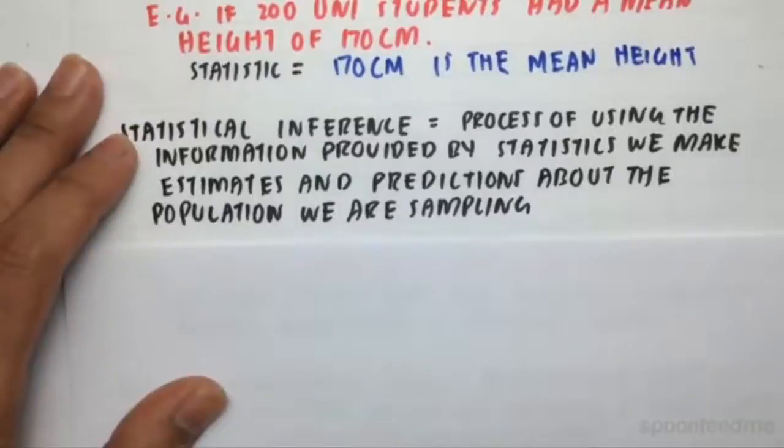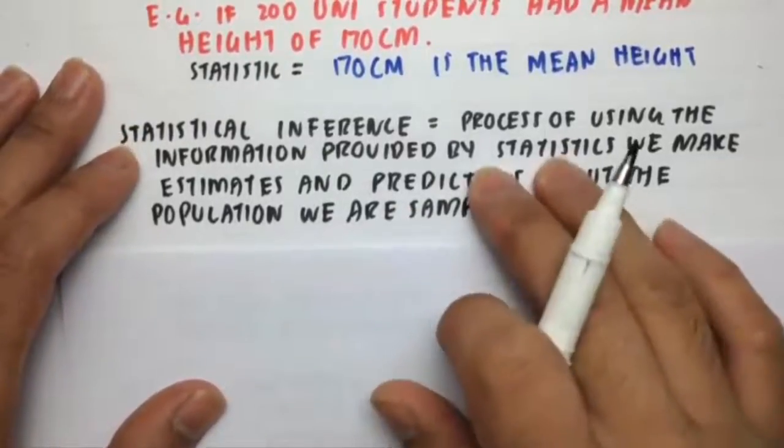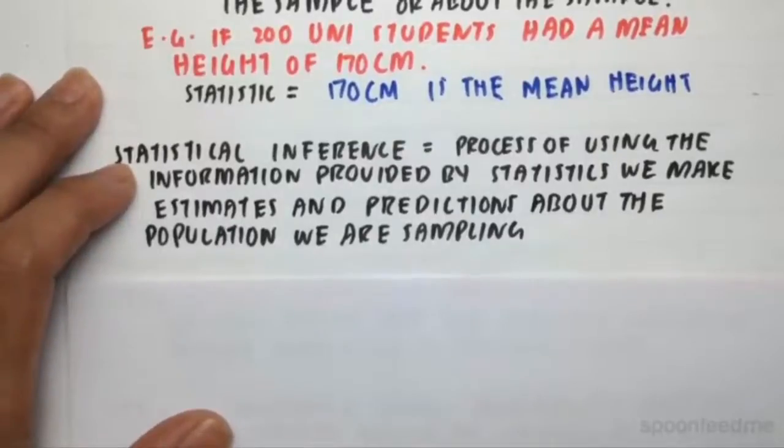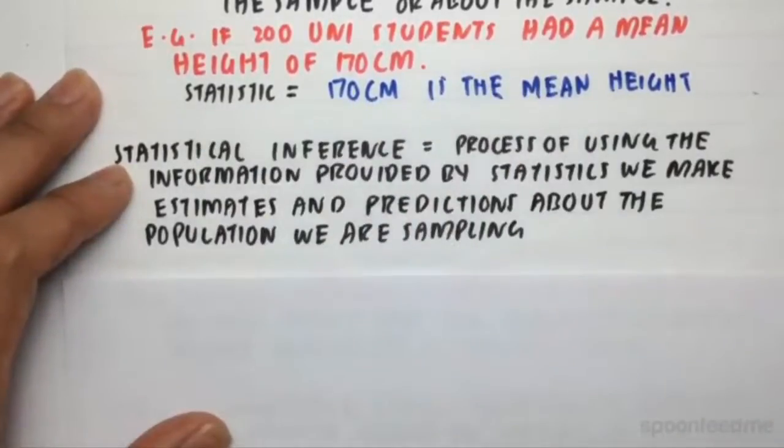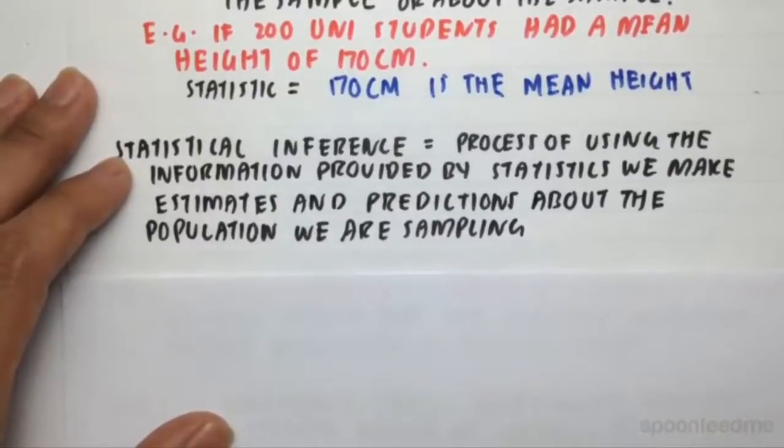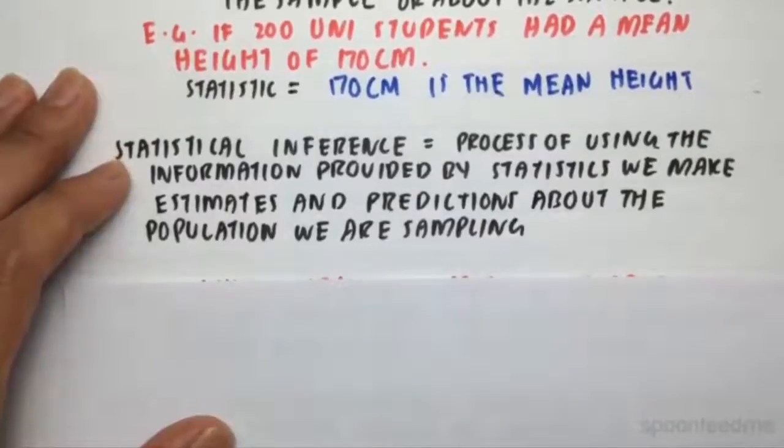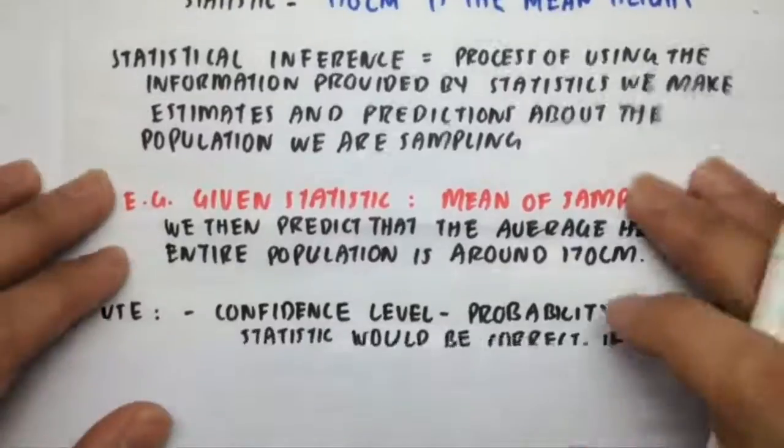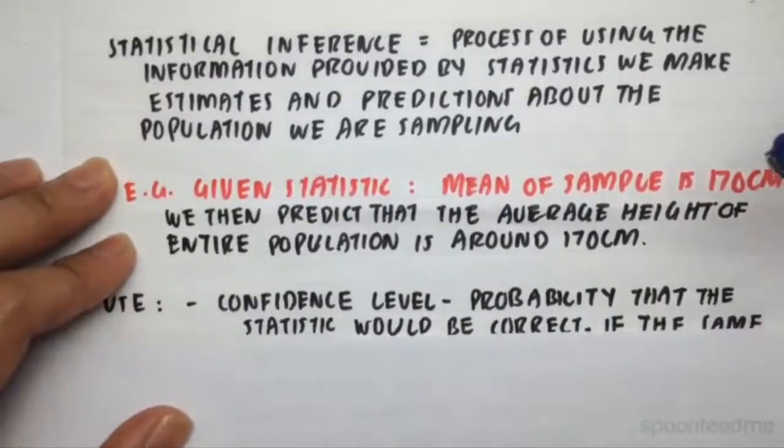So that is a statistic, and that's compared to a population parameter, which is, for example, the mean height of all university students, of the population. And then statistical inferences. So after the process of using information provided by statistics, for example our mean here, we can then make estimates and predictions about the population we are sampling. So for example, we might say, given the 170 centimeter mean that we got from our sample, we could generalize or predict that the average height of the uni students at Harvard, of all students, is around 170 centimeters. So that's what inferential statistics tried to do.